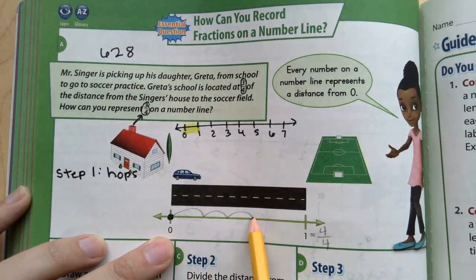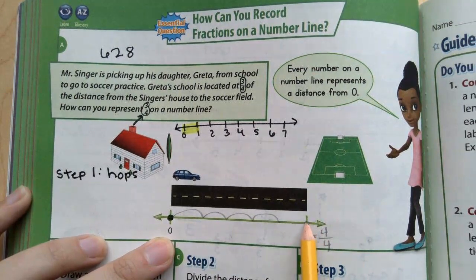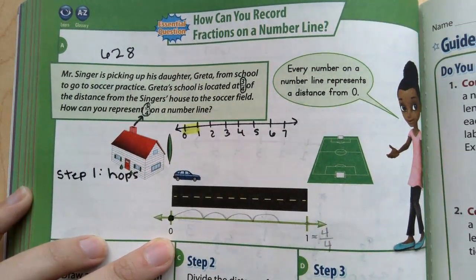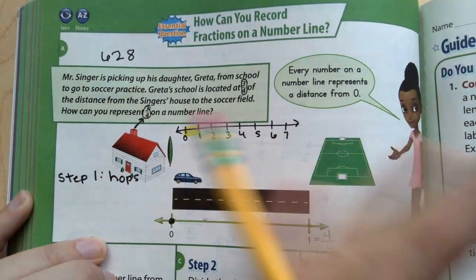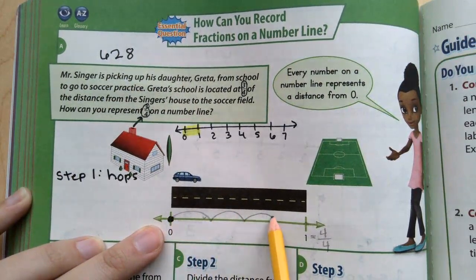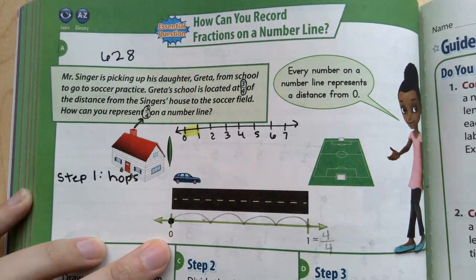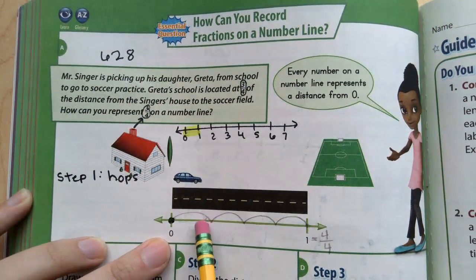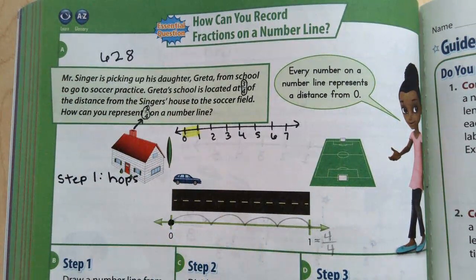So let's go ahead and make those hops. 1, 2, 3, 4. So those are not very even, and I didn't land on my 1. So I'll try again. 4 hops and land on 1. 1, 2, 3, 4. That's pretty close. As long as it's pretty close, we'll use that. Pause the video if you need more time to draw out your hops.